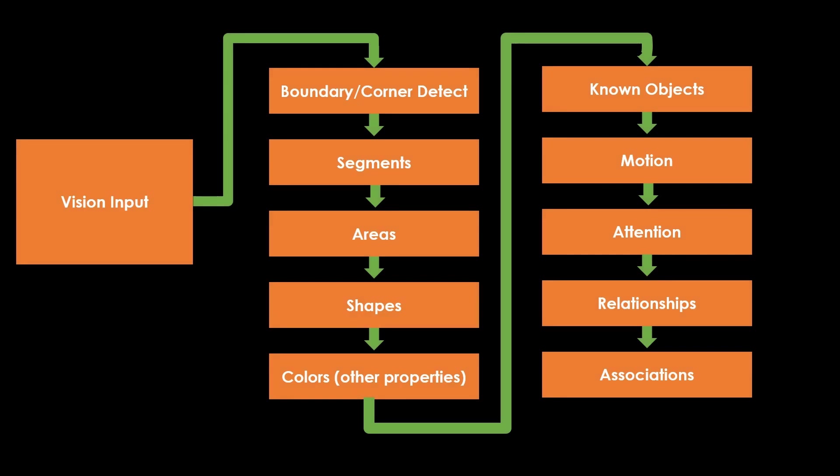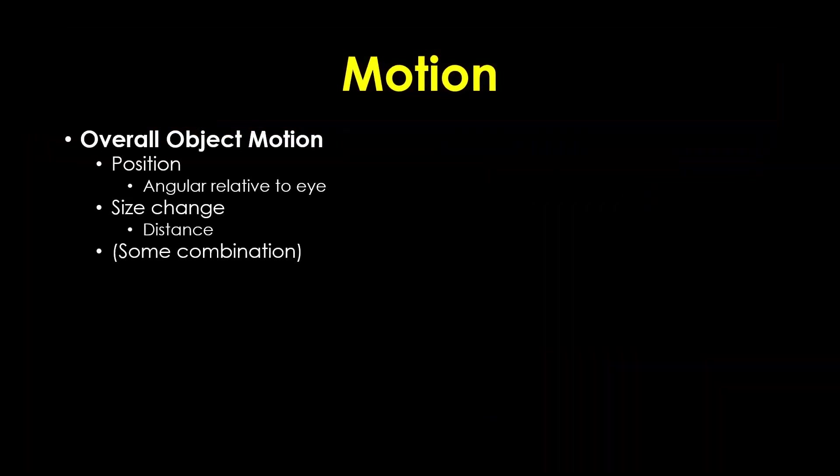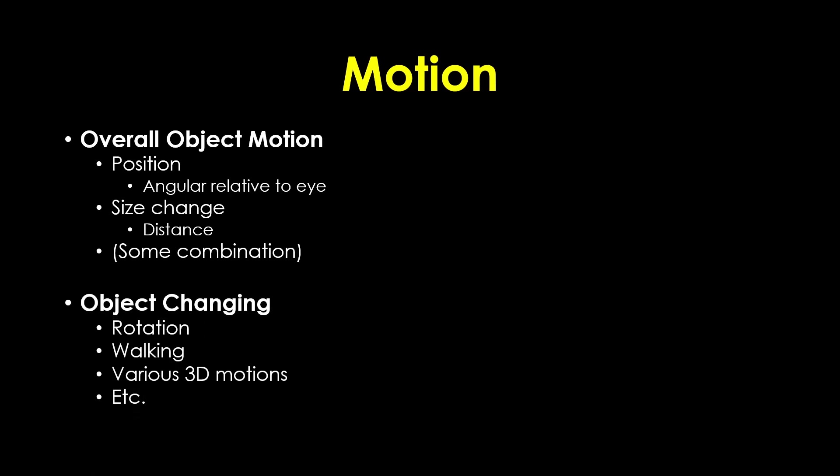In previous videos I presented this perception pipeline, and detecting motion is just a single step in that process. In this video I'll provide a lot more detail. The objectives are to detect two possible object motions: first, a change in object position relative to your position, and an apparent size change which represents a change in distance — and of course some combination. The objects themselves may also be changing in ways like walking, turning, or waving, but that's a separate topic.